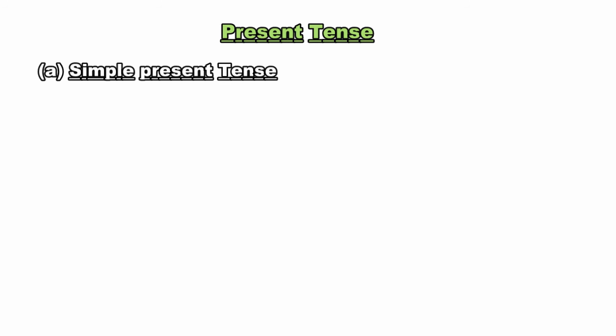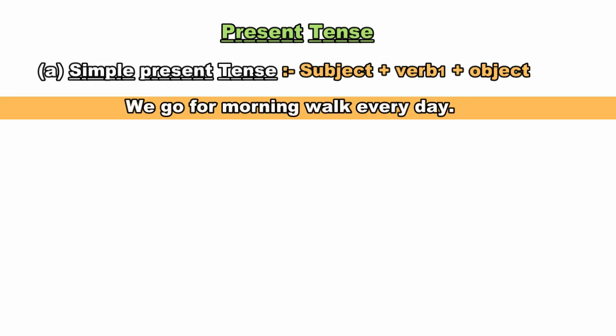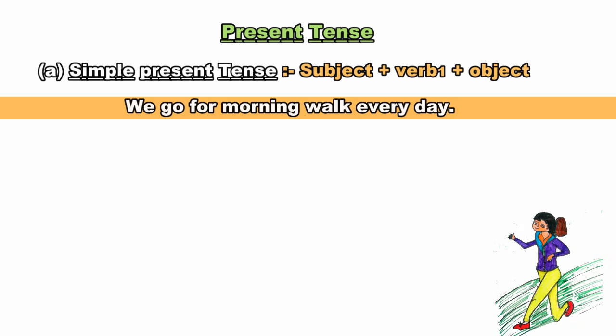Starting with present tense, Part A: Simple Present Tense. This is the structure of sentences in simple present tense: Subject + Verb 1 + Object. For example, 'We go for morning walk everyday' — here 'go' is in V1 form. Humein structure mein main focus sirf verb ki form par dena hai. Hume sirf itna idea hona chahiye ki simple present tense mein V1 ka use hota hai.